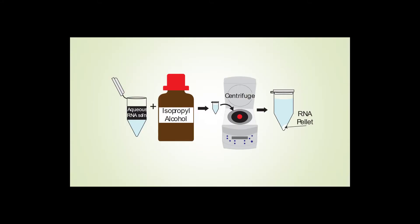Next, we'll precipitate the RNA from the aqueous solution by adding isopropyl alcohol and centrifuging.